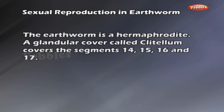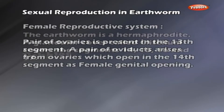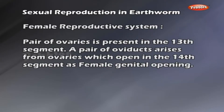Female Reproductive System: A pair of ovaries is present in the 13th segment. A pair of oviducts arises from the ovaries, which open in the 14th segment as female genital openings.